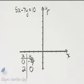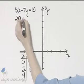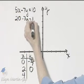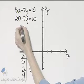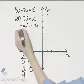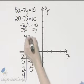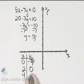And then one more ordered pair solution. Let's let x be, say, 4. If x is 4, I'll have 20 minus 7y is 10. Subtract 20 from both sides, and I'll have 10 minus 20 or negative 10. Divide both sides by negative 7, and I'll have y is 10 sevens.